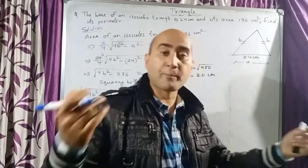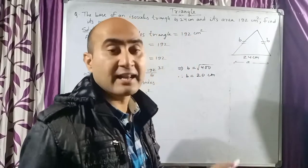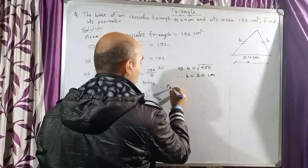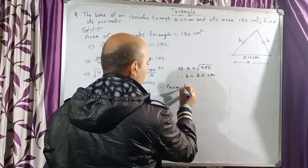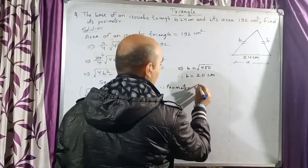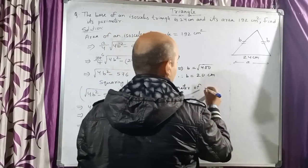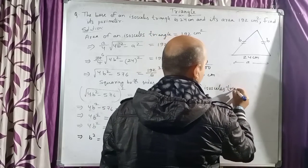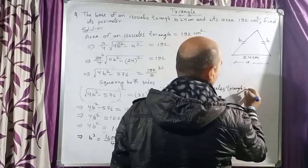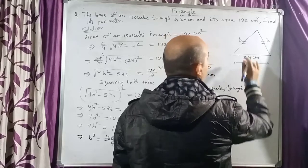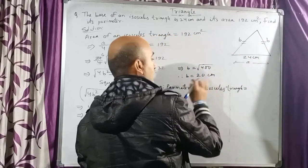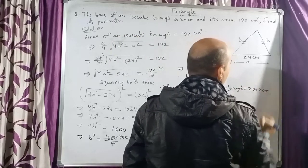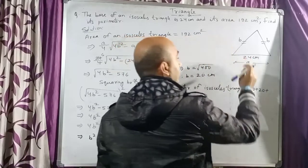Now perimeter is very easy: adding all three sides. So therefore, perimeter of isosceles triangle equals b + b + a, which is 20 + 20 + 24.